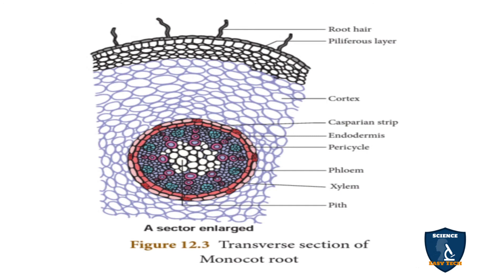The epidermis is the epiblema, filiferous layer, or rhizodermis — the outermost layer made up of a single layer of parenchyma cells. Cuticle and stomata are absent. Root hairs are present. The function of epiblema is to give protection to the inner tissue, and the function of root hairs is to absorb water and minerals from the soil.